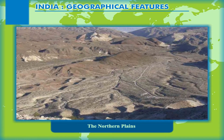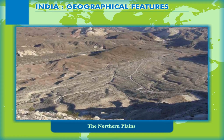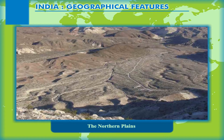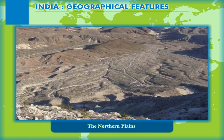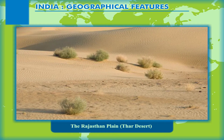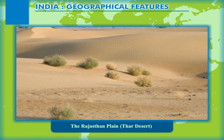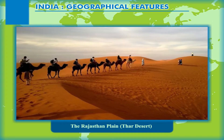Not only in surface relief, there are also remarkable and distinct variations in the characteristics of these plains as we travel from west to east, from Sindh to Assam. The Rajasthan plain, or Thar Desert, is the westernmost division of the northern plains, lying to the west of the Punjab-Haryana plains.